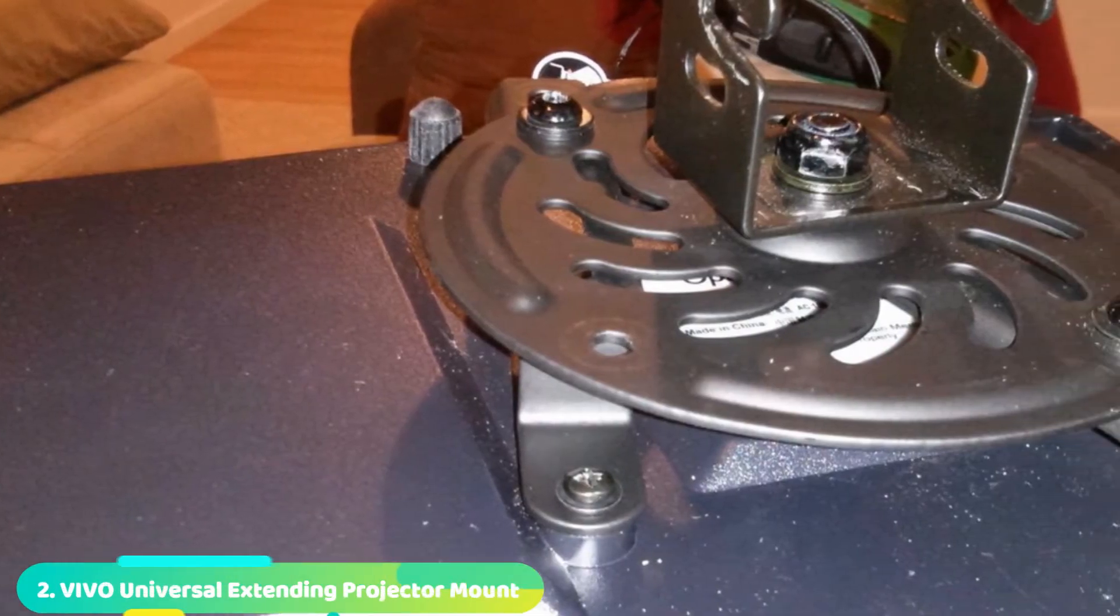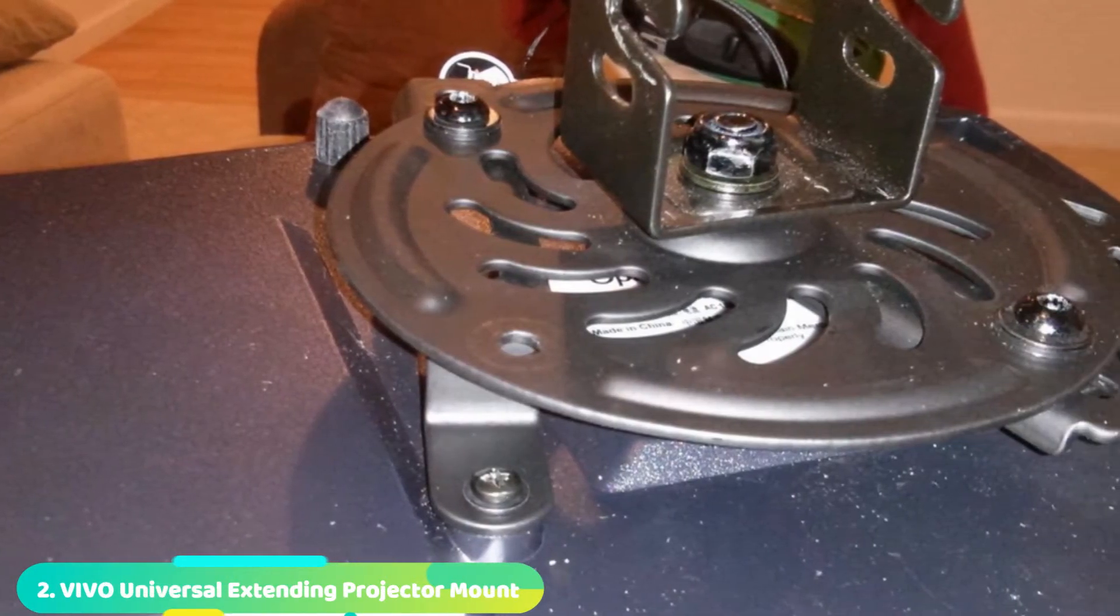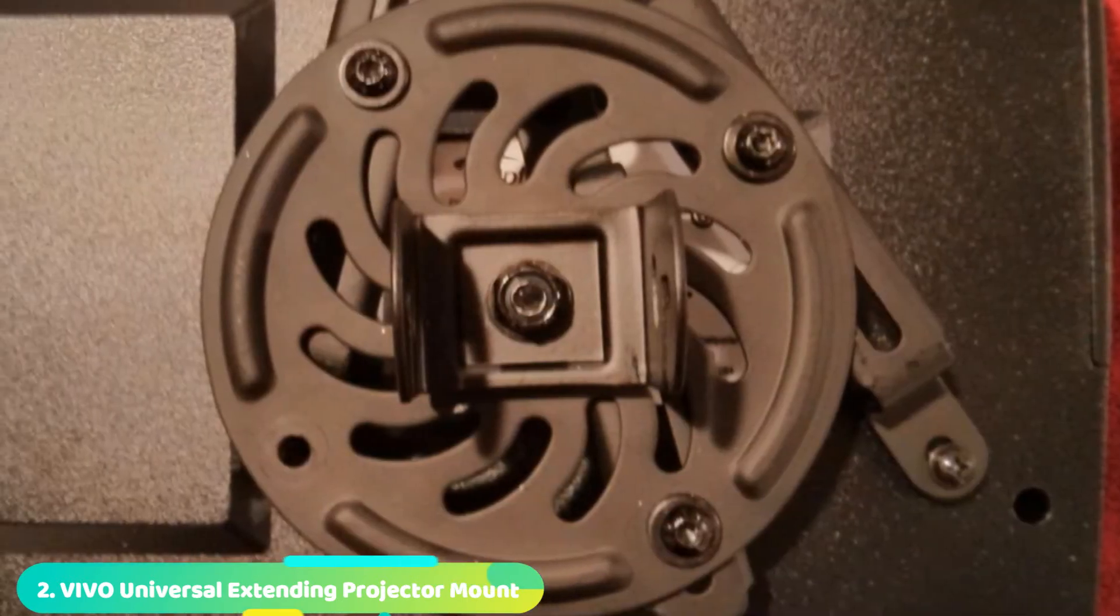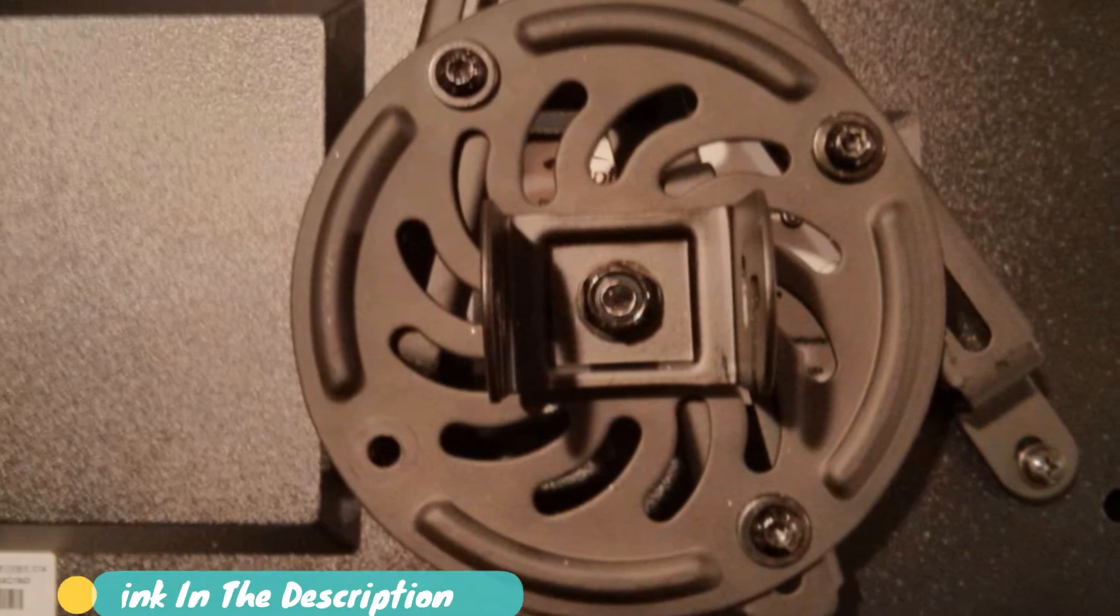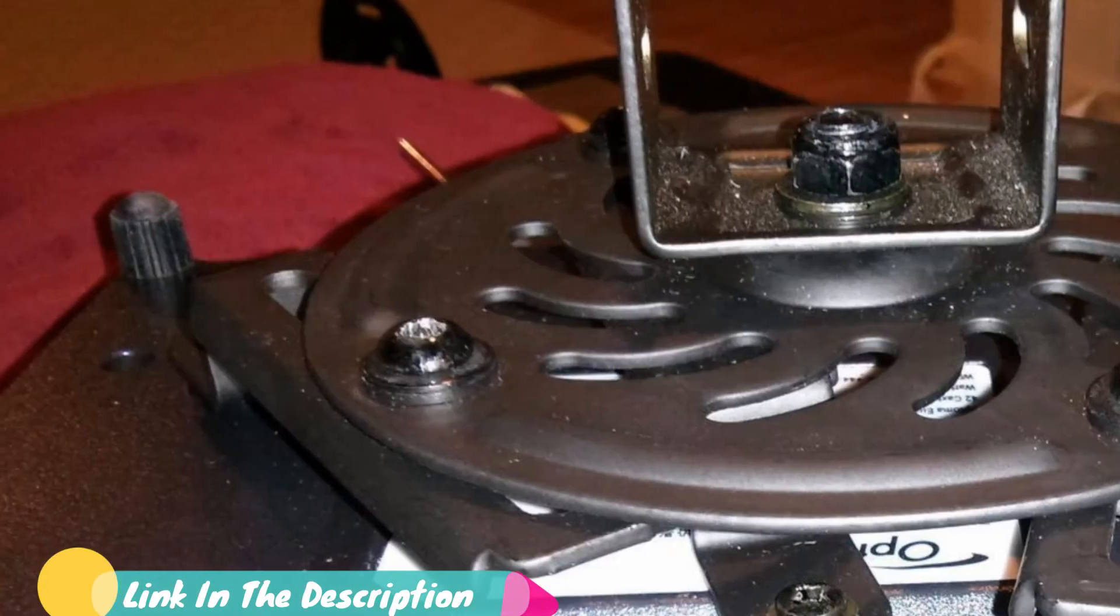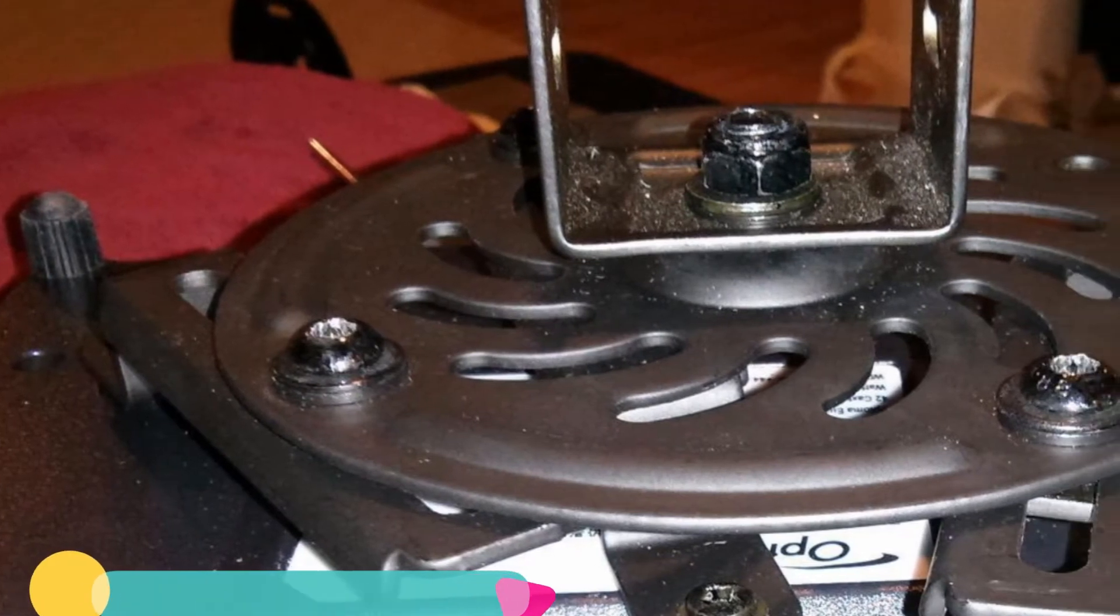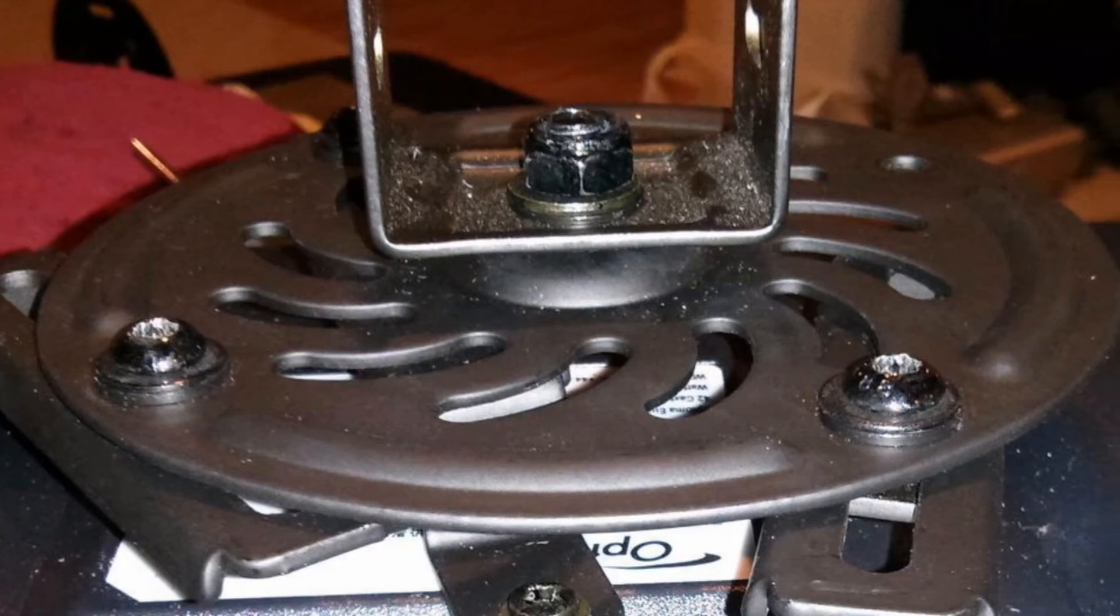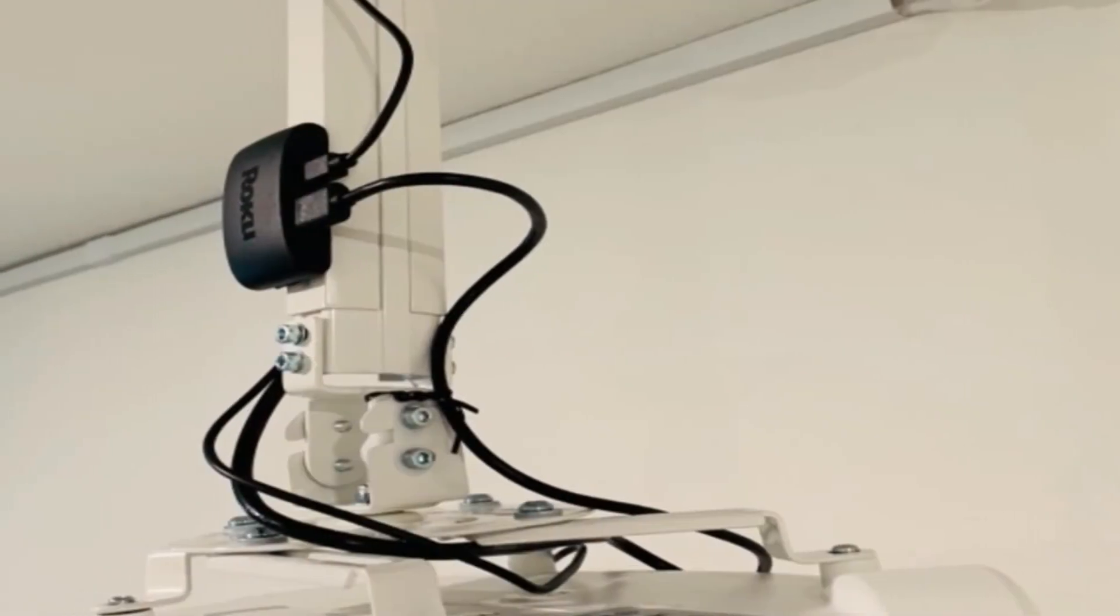Moving on to number two, Vivo Universal Extending Projector Mount. Vivo simply makes some of the best projector mounts out there, and they always keep a budget-friendly price in mind. After all, you've already invested a fair amount into your projector. Why should the mount kill your budget? It doesn't have to. Much like their competitors, Vivo makes this mount out of high-grade steel with a 30-pound maximum capacity.